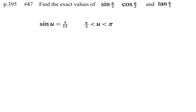Page 395, number 47. Find the exact values of the sine of u over 2, the cosine of u over 2, and the tangent of u over 2. We're given that the sine of u equals 5 thirteenths, and that u is between pi over 2 and pi.